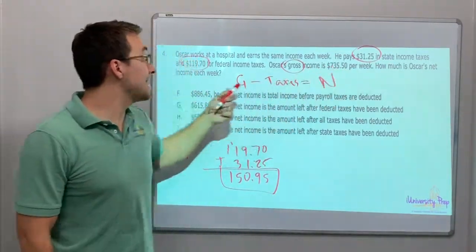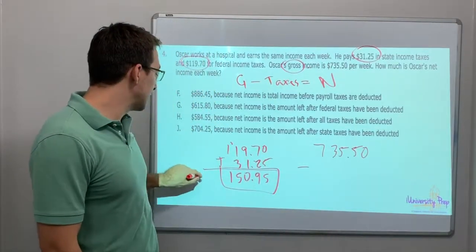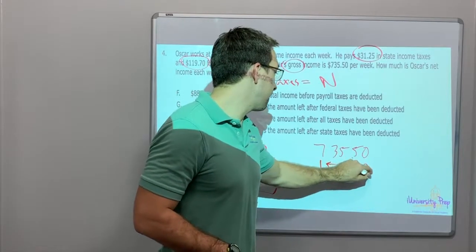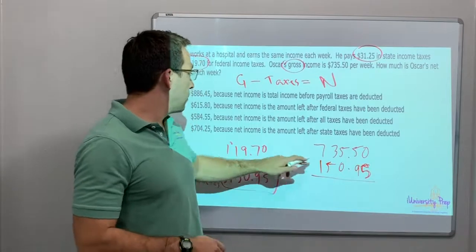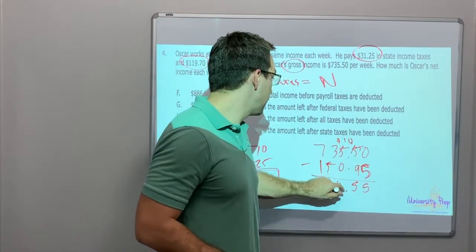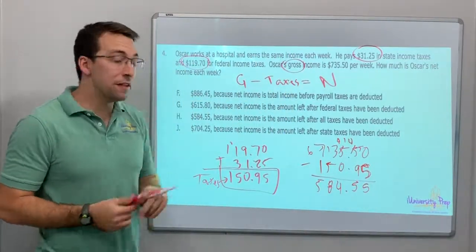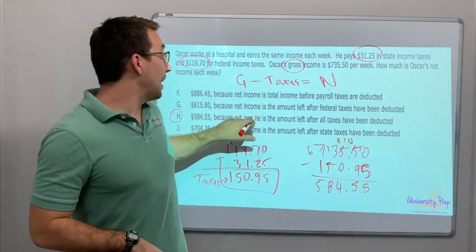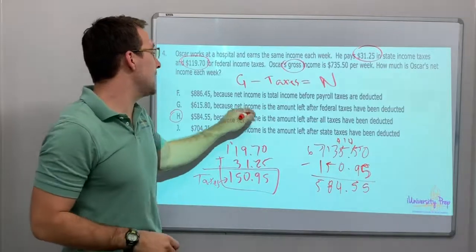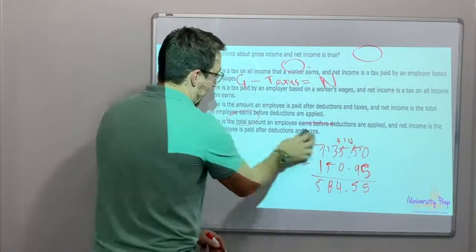And it's asking, how much is Oscar's net income? So his gross is $735.50 minus his taxes. $735 minus his taxes, $150.95. So now I'm going to borrow from the 5, 4, 5, borrow from the 5. 14 minus 9 is 5, 4, 6, 13 minus 5 is 8. $584.55. Because net income is the amount left over after all the taxes. So you have the gross income minus the taxes, the two types of taxes, equals the net income after taxes, after deductions, after taxes. Last question on this video.